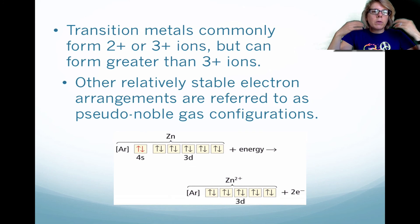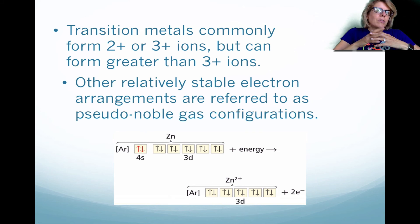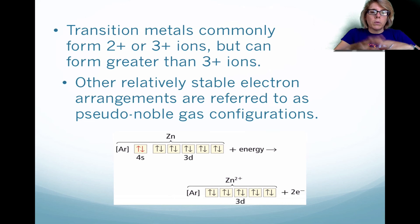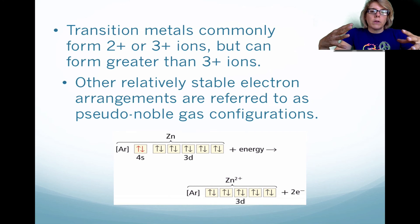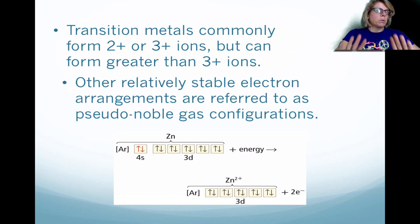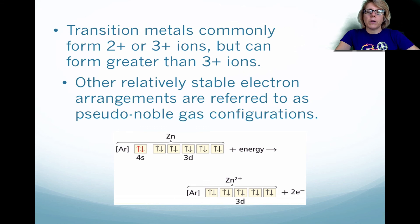You might ask: why do we use Roman numerals? With transition metals, they can form 2-plus or 3-plus ions — typically they can form even greater than 3-plus ions. When they lose their electrons, they tend to form what we call pseudonoble gases, meaning they become like a noble gas. They still retain the number of protons, but they lose electrons to have a more stable configuration.